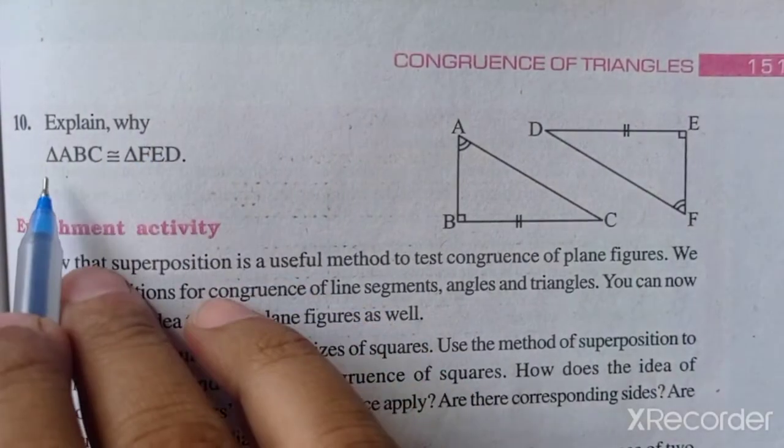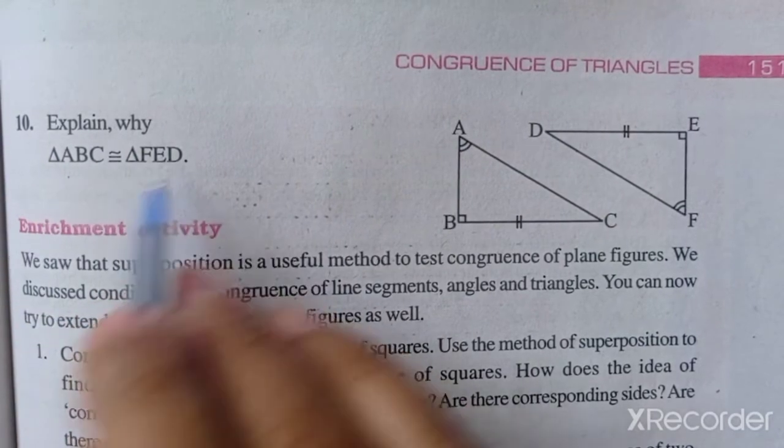Now question number 10: Explain why triangle ABC is congruent to triangle FED.